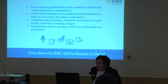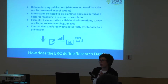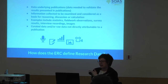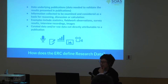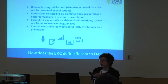How does the ERC define research data? The official line is that it's basically data that underlies publication — any data needed to validate the results presented in your publications. That's one category. It also includes information collected as a basis for reasoning, discussion, or calculation, and the ERC defines various examples of data types. It also covers any curated or raw data not directly attributable to a publication — data sets for your whole project that haven't necessarily underpinned publications would still be considered research data you need to share.